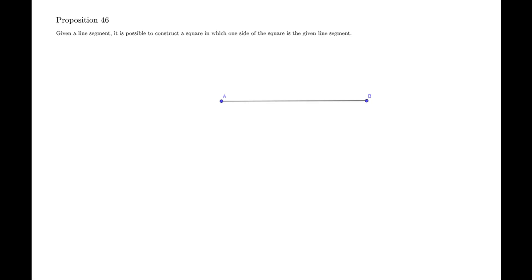Greetings everybody, and welcome to Proposition 46. What this proposition says is that if we are given a line segment AB, then it's going to be possible to construct a square in which one side of the square is the given line segment. Let's see how we might go about this.